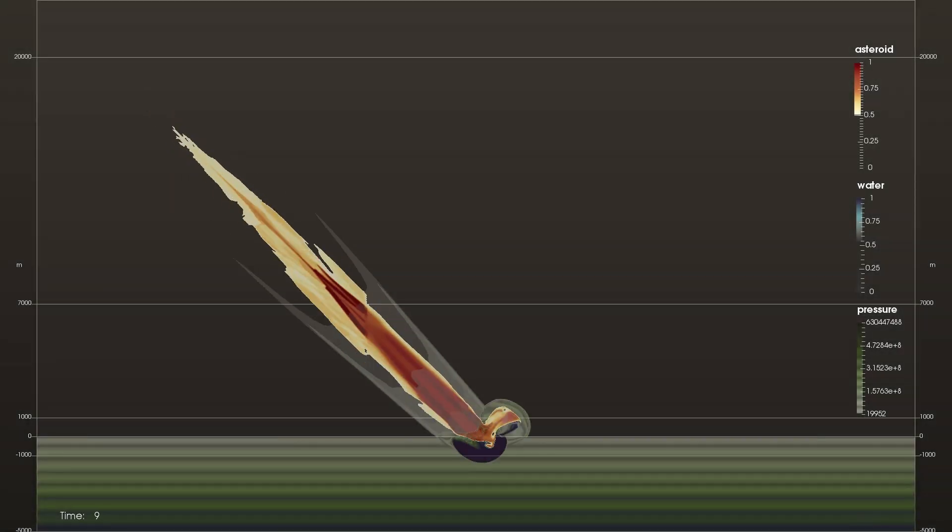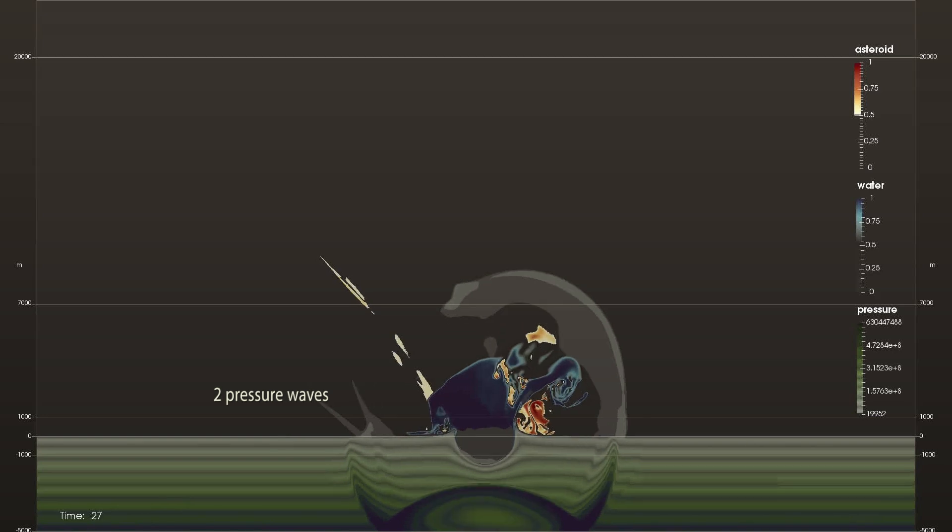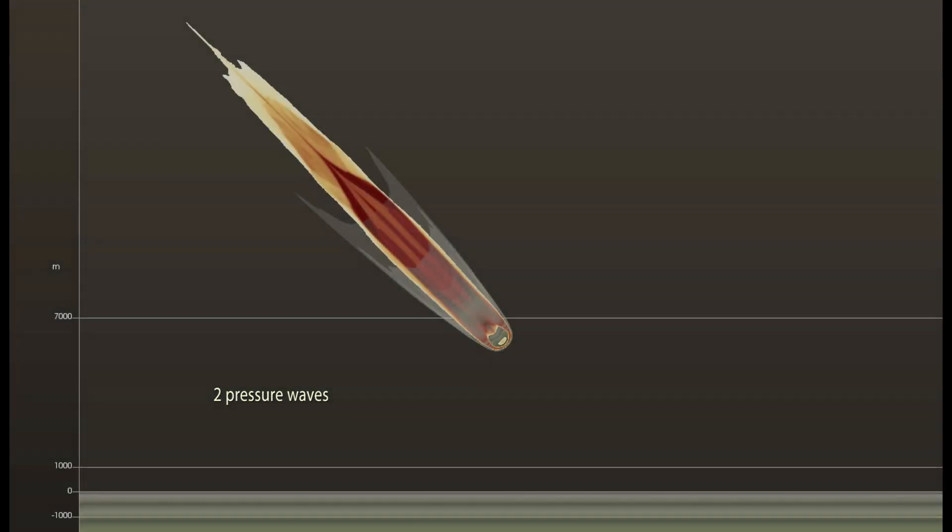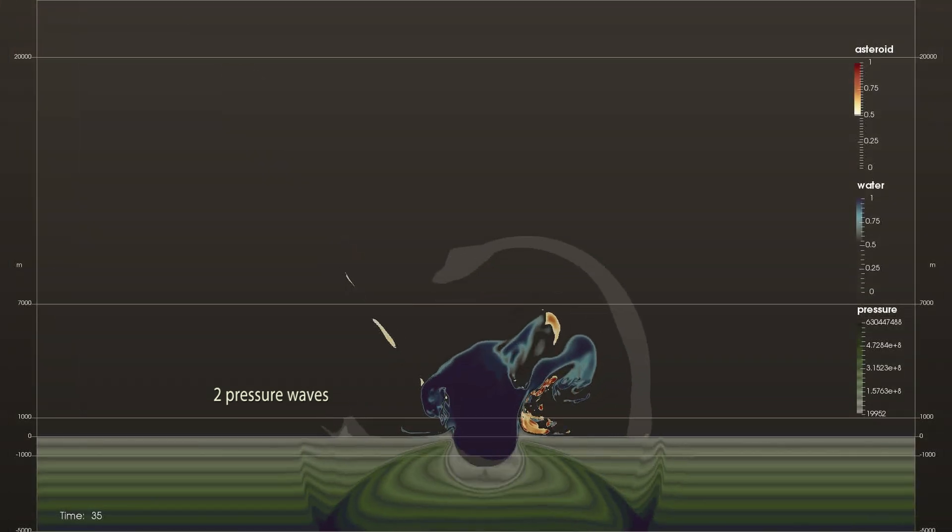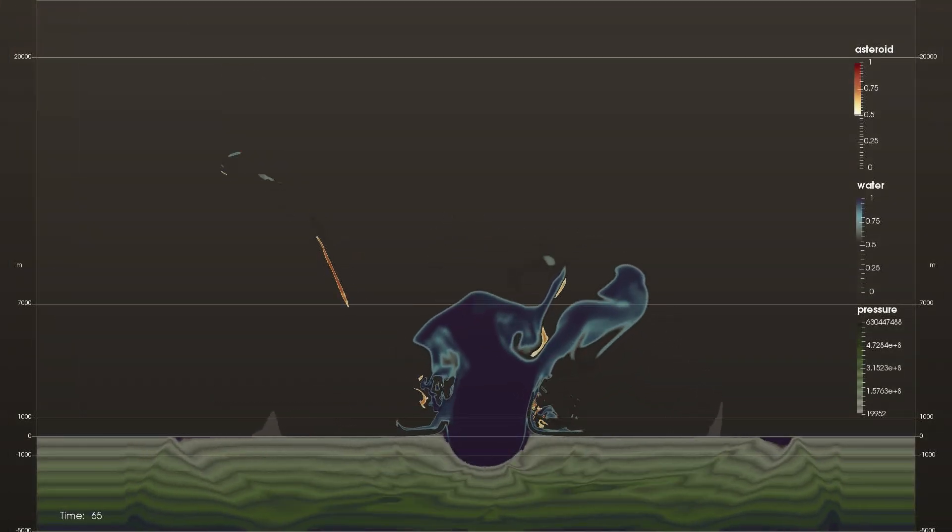A feature discovered through this visualization is a pressure enhancement uprange of airburst impacts. Two pressure waves combine to create this: one from the asteroid and its trajectory, and one from the explosion when the asteroid material hits the water. This may affect wave propagation and will have to be studied.